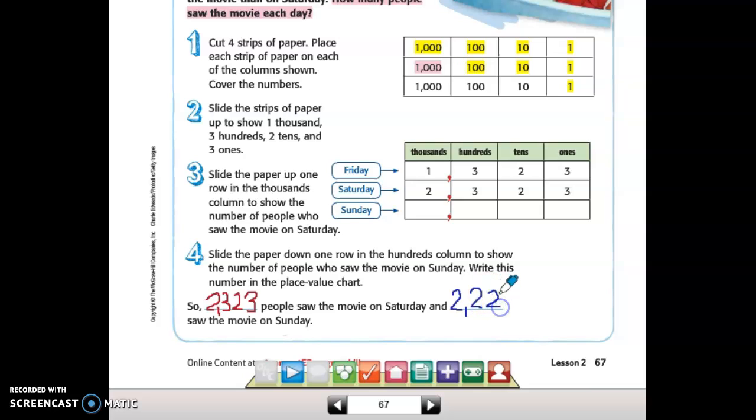Now I've got still my 2,000 because it said in the problem 100 less than on Saturday. So I've still got 2,000 but instead of having 300, I now only have 200. So I have 2,223.